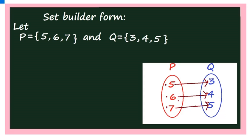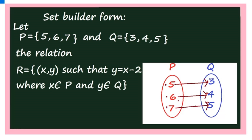You can observe: 5 minus 2 equals 3, 6 minus 2 equals 4, 7 minus 2 equals 5. And if it is 10, you can guess where 10 maps — 10 maps to 8, since 10 minus 2 equals 8. In general, if x is there, it maps to x minus 2. The relation R equals {(x, y) such that y = x − 2, where x ∈ P and y ∈ Q}. This is the relation R in set builder form.